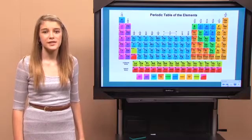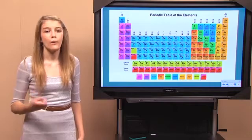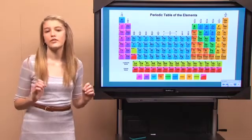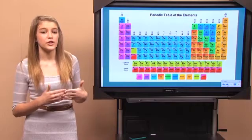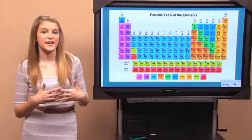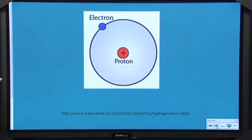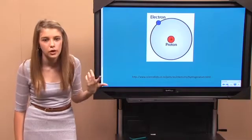Remember how we said that the electrons buzz around the nucleus in a cloud? Well, we can also pretend they orbit the nucleus in a specific level of energy. The number of the period tells you the number of energy levels the atom has for those electrons to buzz around. Check it out. Hydrogen is on the first row, so it is in period one. If you look at the atom, it only has one energy level for its electron to orbit around on.